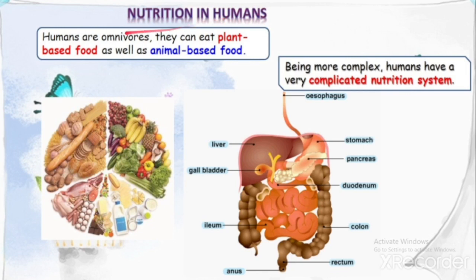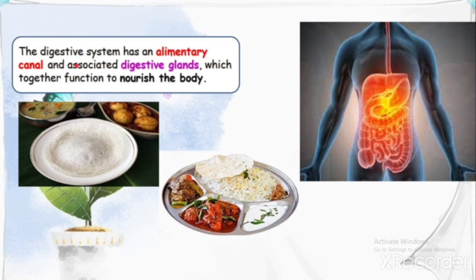Humans are omnivorous — they can eat both plant-based and animal-based food. Being more complex organisms, humans have a very complicated nutrition system involving the esophagus, stomach, liver, gallbladder, pancreas, duodenum, rectum, small intestine, and large intestine. In your exam, you may be asked to draw and label a diagram of the digestive system.